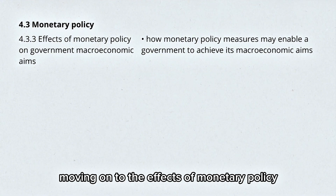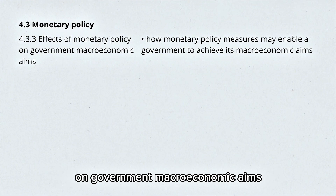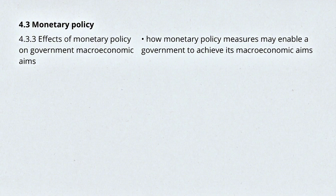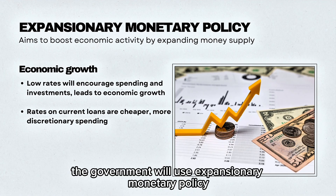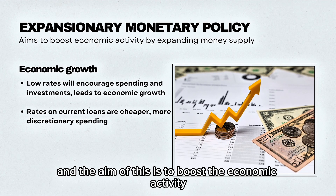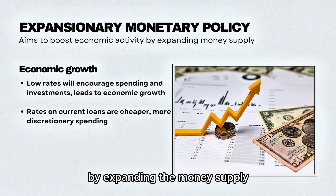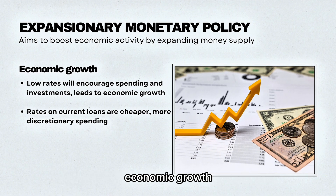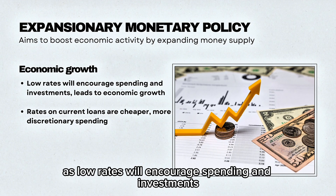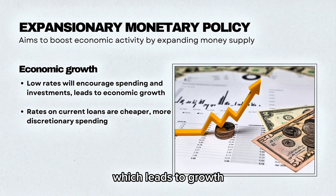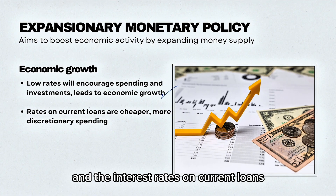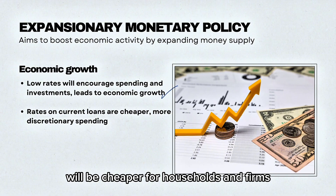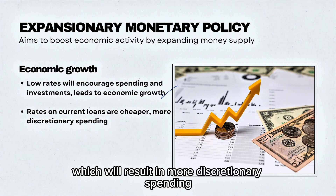Moving on to the effects of monetary policy on government macroeconomic aims. The government will use expansionary monetary policy, and the aim is to boost economic activity by expanding the money supply. Expansionary monetary policy promotes economic growth, as low rates encourage spending and investment, leading to growth. The interest rates on current loans will also be cheaper for households and firms, resulting in more discretionary spending.